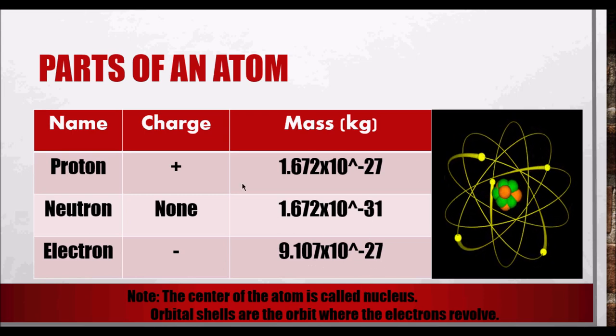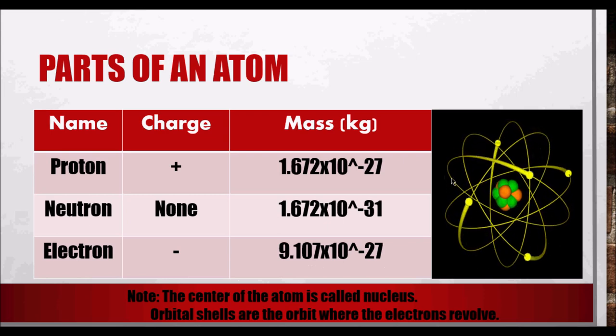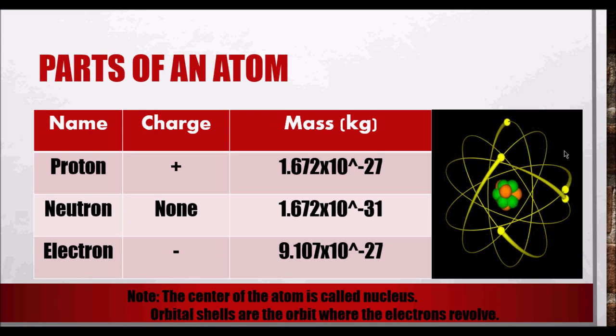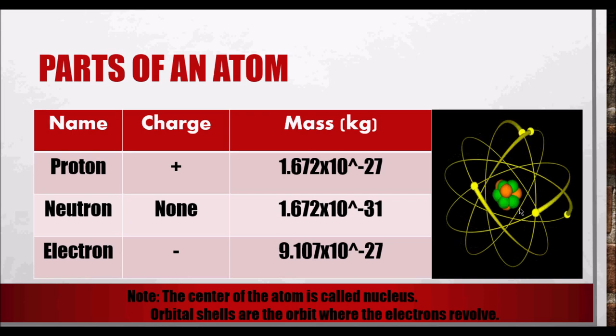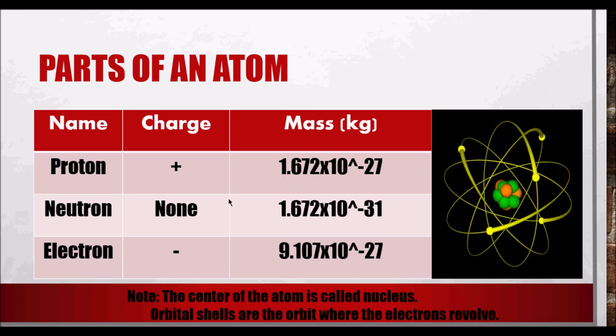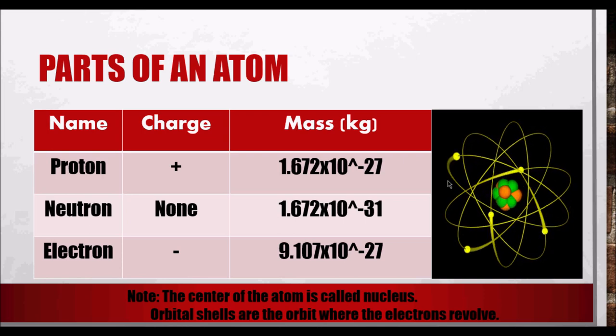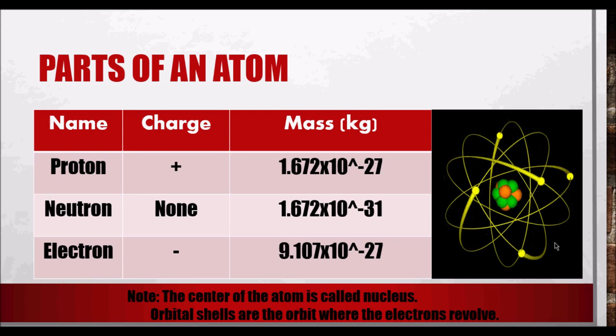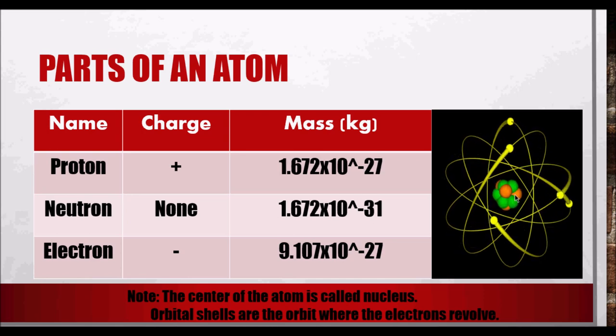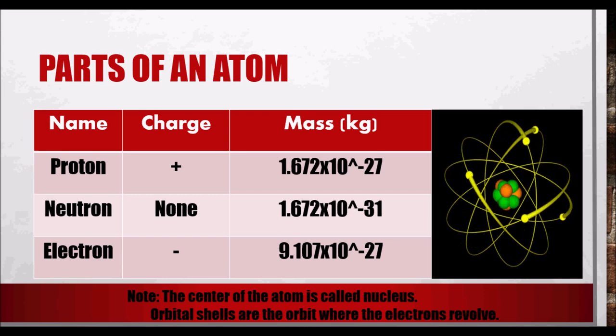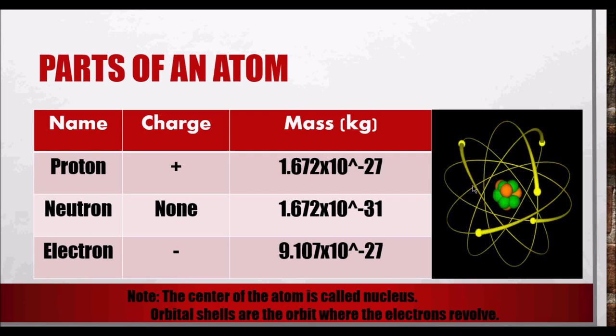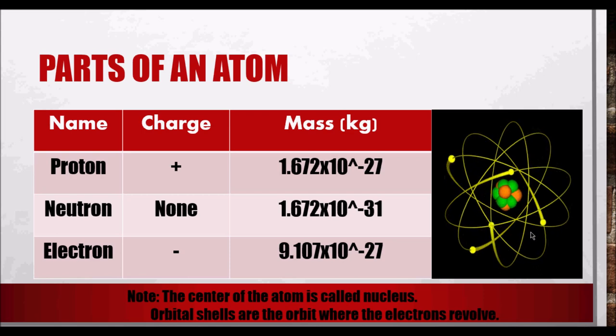This picture shows Bohr's atomic model. Here we can see which are the proton, electron, and neutron. The center is called the nucleus. The orbiting particles around the nucleus are electrons. Inside the nucleus, you will find the protons and neutrons. The path where electrons orbit around the nucleus is called orbital shells.